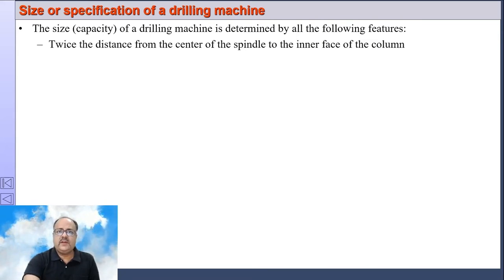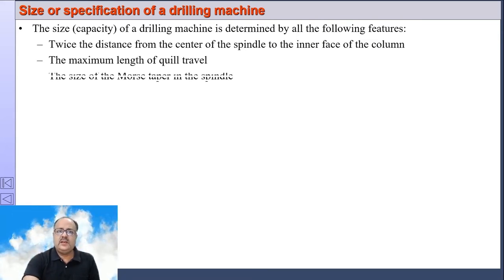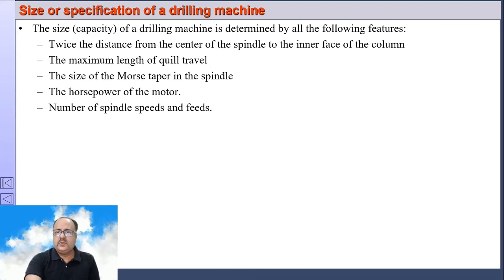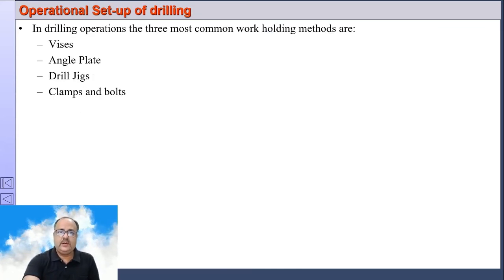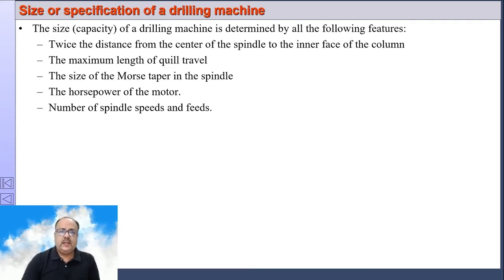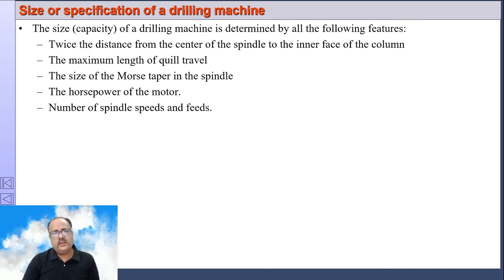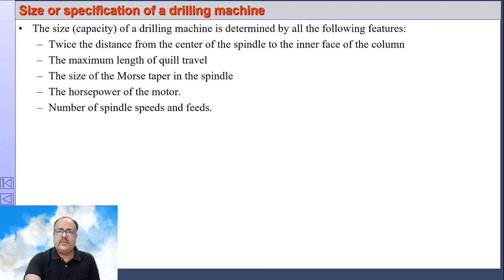How do you specify a drilling machine? You specify it by twice the distance between the center of the spindle and the inner face of the column, the maximum length of quill travel, the size of the taper of the spindle, the power of the motor, and the number of spindle speeds and feeds.